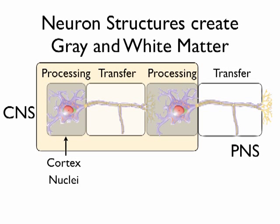In the spinal cord, that gray matter is referred to as horns of gray matter — there's a posterior horn and an anterior horn. That butterfly shape pushes the gray matter out into these little projections called horns. So cortex, nuclei, and horns are the terminologies used for gray matter.